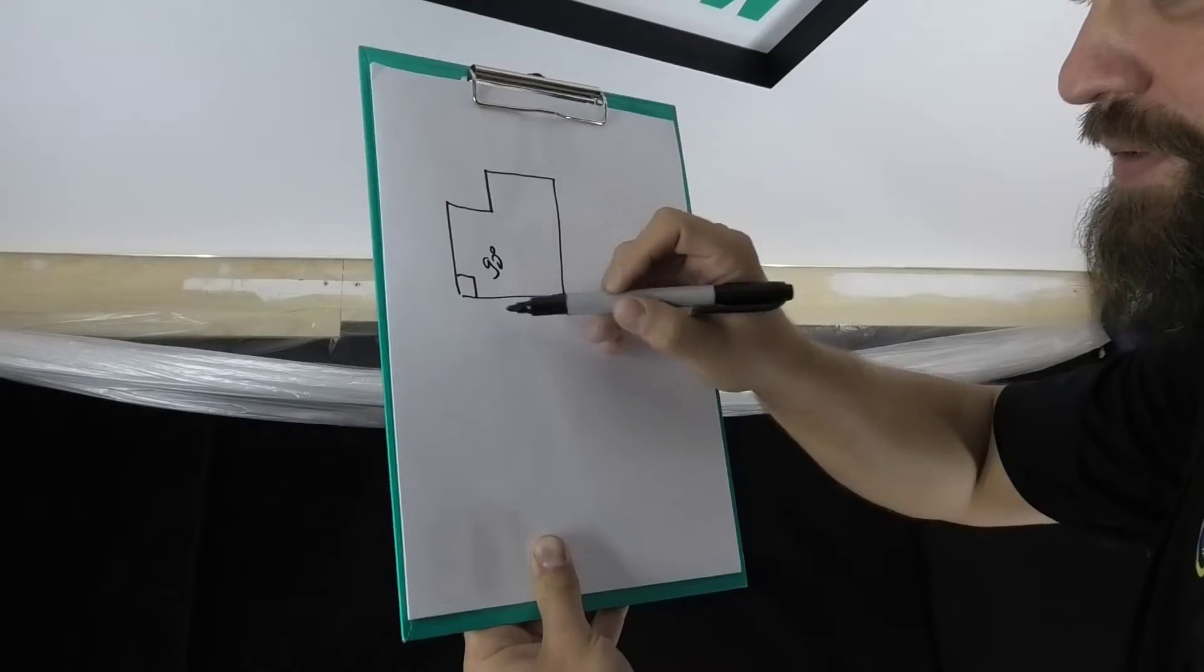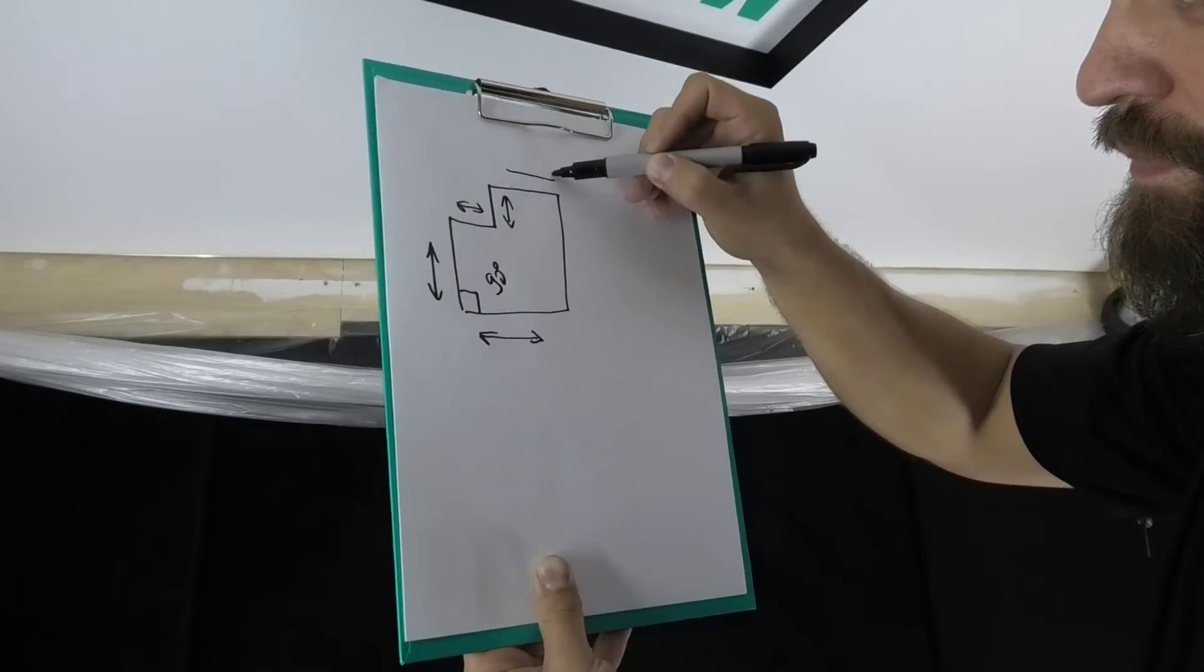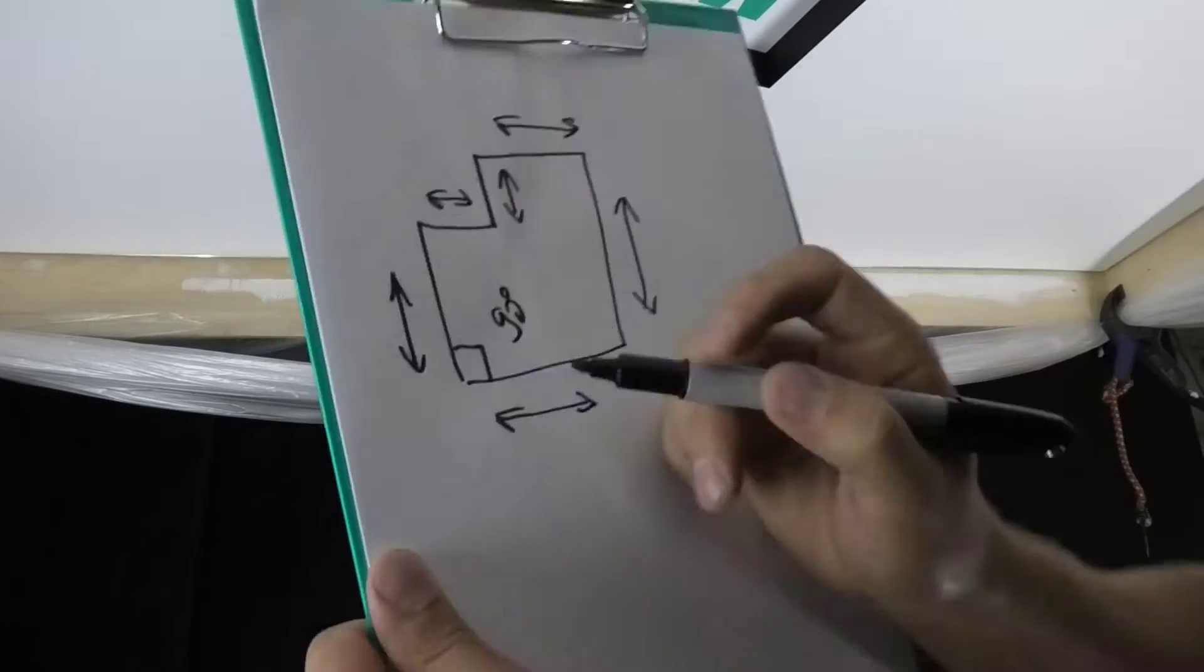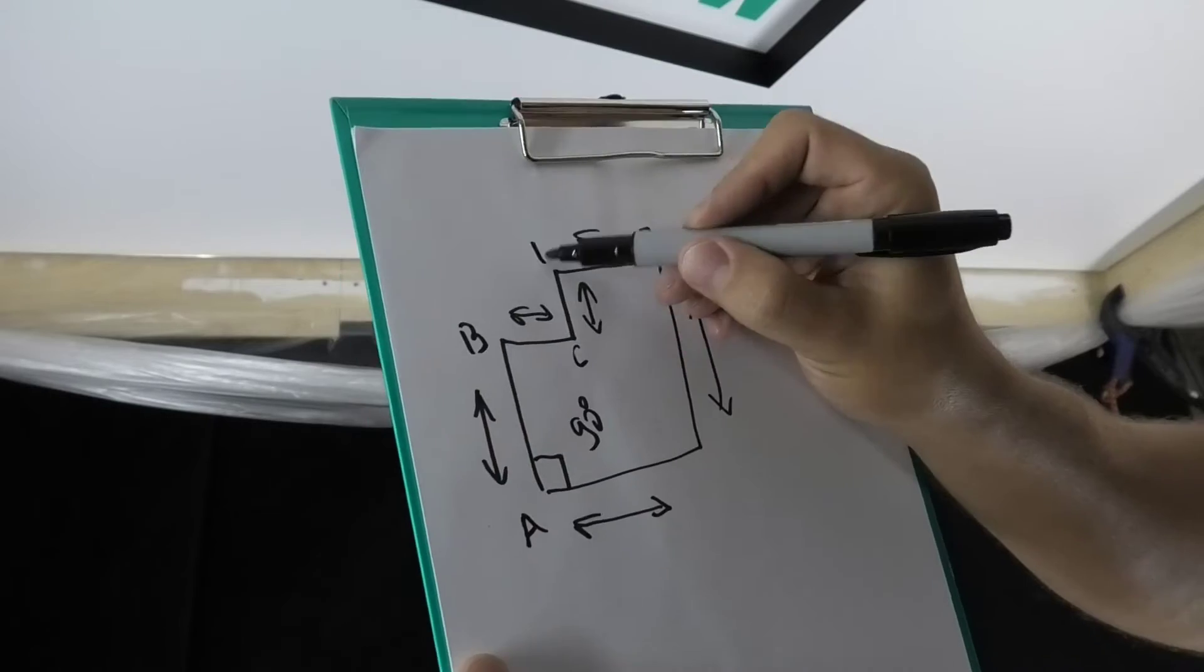If the corners of the room are approximately 90 degrees, then it is enough to measure the lengths of the walls. We mark each corner with a letter in alphabetical order clockwise.